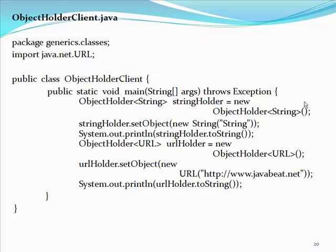Let us see another example of generic classes having two or more parametric types. Assume that we want to represent a class that holds a composite object along with the elements of the composite object. We can see this kind of composite-child relationship in a number of places — for example, a folder containing multiple files, or a window containing a number of UI components.